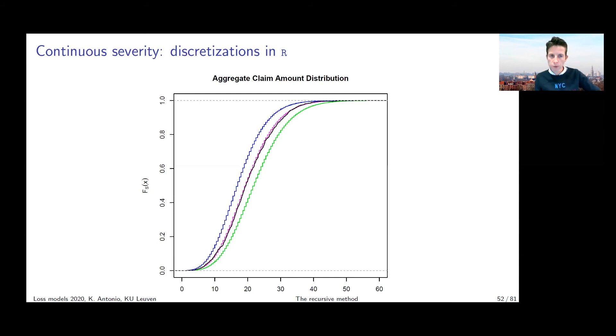If you have a given distribution estimated for the number of terms in the sum and for the severity of each of the terms in the sum, how would you draw simulations from the resulting compound loss S? And how would you think about using this Panjer recursion in order to get grip via a recursive scheme on the distribution of S? That's the main idea here. Any questions, anything you want to add?